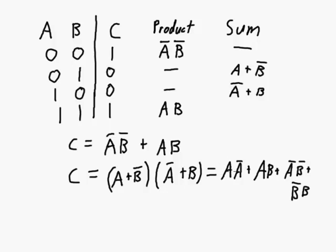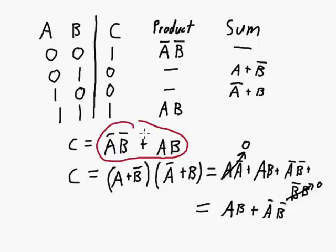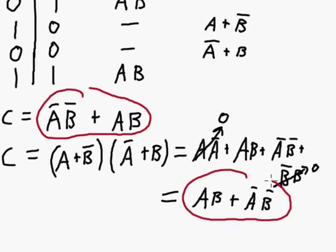So if you remember your Boolean algebra rules, any variable ANDed with the inverse of itself becomes zero. Both of those terms become zero, and any term ORed with zero is just that term. So we can just ignore those zeros and all we're left with is AB or not A not B. So you can see that term and that term are essentially the same, I just changed the order of the two products around.